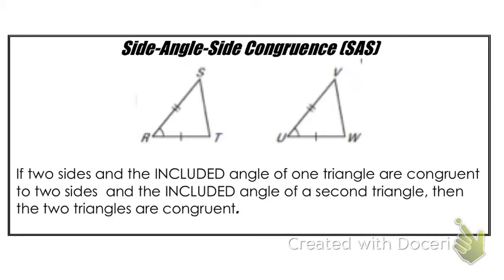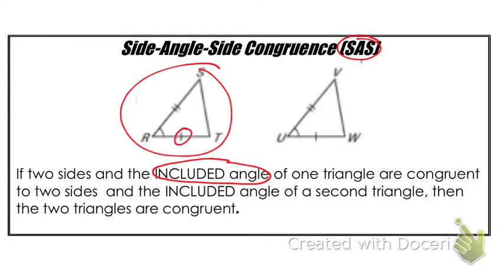The first triangle congruence postulate we're going to touch on today is side angle side. So if two sides of a triangle and the included angle, let's talk about that real quick. Two sides, so if you look at this specific triangle right here, we have two sides marked, one with one hash mark and one with two.